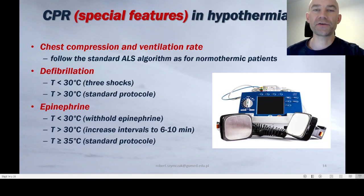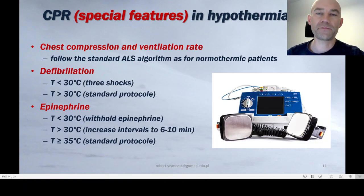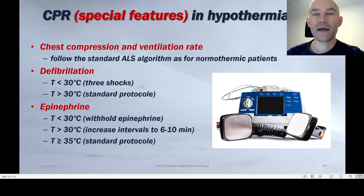What are the special features of CPR in hypothermia? Chest compression and ventilation rates are the same as for normothermic patients — standard advanced life support algorithm. For defibrillation, when core temperature is below 30°C and it's a shockable rhythm, give shocks at maximum energy. But if after three shocks there is no reaction, withhold further shocks until core temperature reaches 30°C or above. Above 30°C, resume the standard defibrillation protocol every two minutes of CPR.